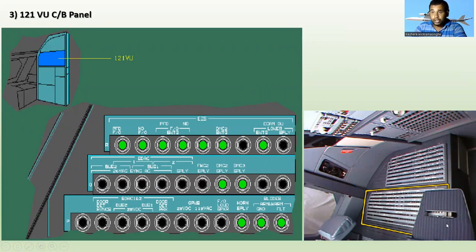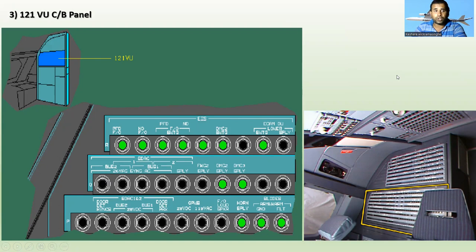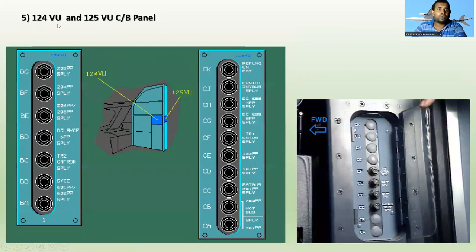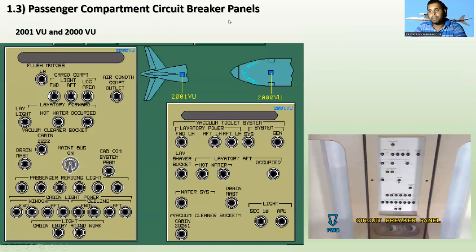On the 121VU panel you can see EIS circuit breakers and ASTACK 1 and 2 circuit breakers — slides, warning, home, ground, flight. The 123VU circuit breaker panel is also situated behind the third occupant seat with many circuit breakers. The 124VU and 125VU circuit breaker panels are also located there — you can see the 124VU and 125VU panels in their respective positions.